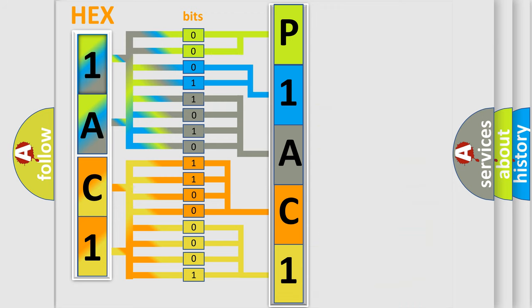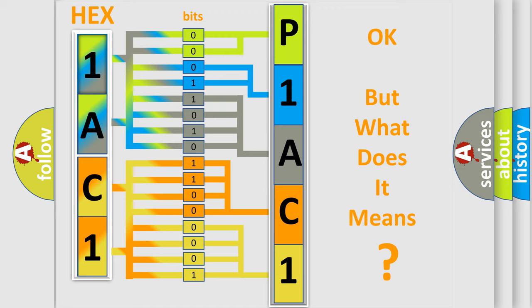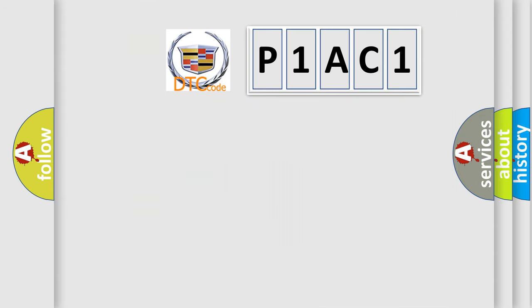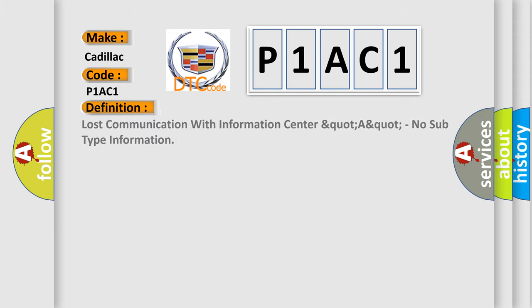We now know in what way the diagnostic tool translates the received information into a more comprehensible format. The number itself does not make sense if we cannot assign meaning to what it actually expresses. So, what does the diagnostic trouble code P1AC1 interpret specifically for Cadillac car manufacturers?